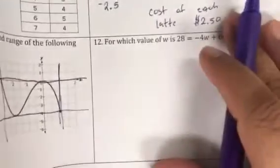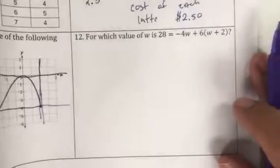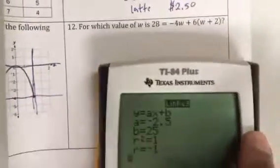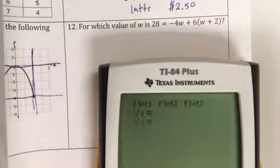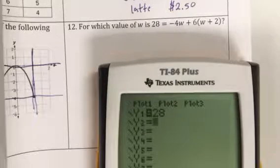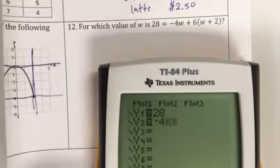This last problem, and I'm pretty sure the bell's about to ring, so please ignore that bell. We're going to put in y equals. I'm going to put in 28 in y1, and then y2, I'm going to type in. Instead of the w, I'm going to put in x.